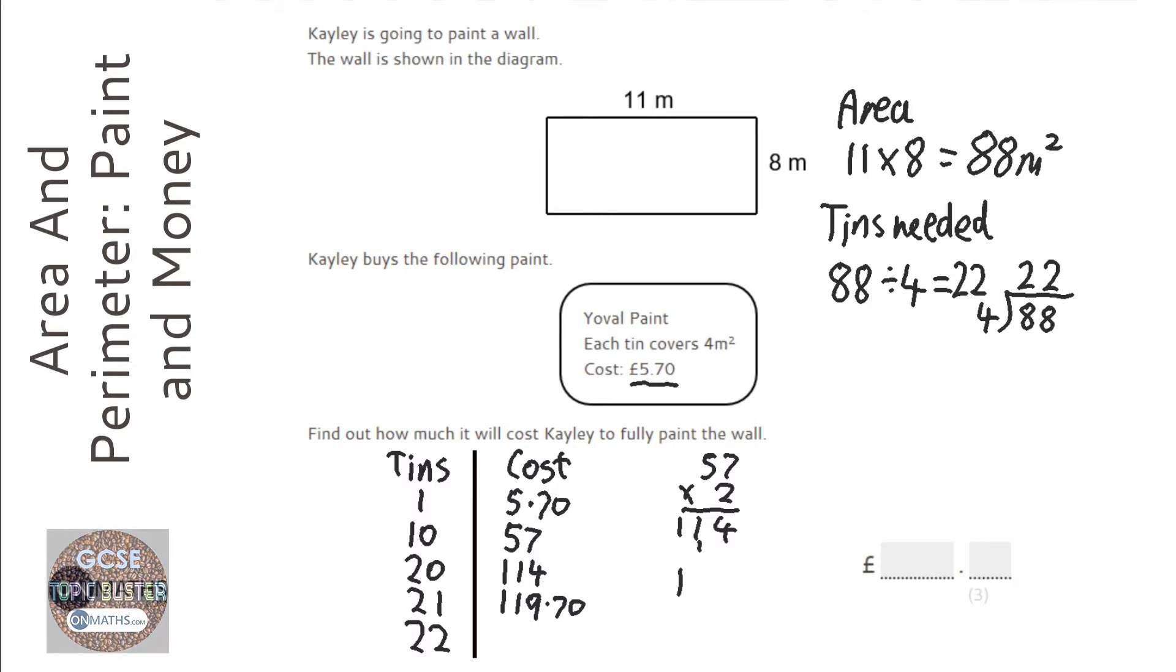So, this could be £119.70 plus £5.70. So, that's £125.40.